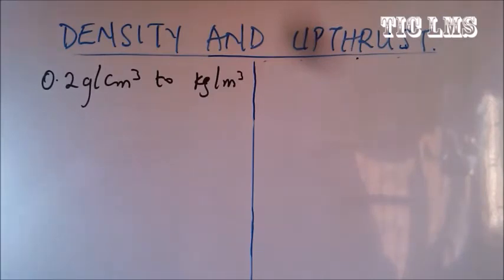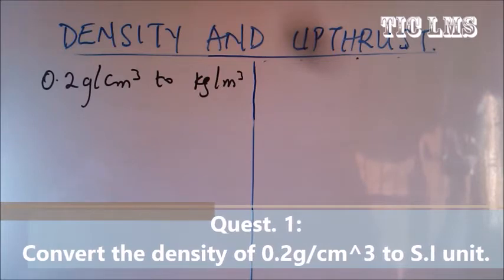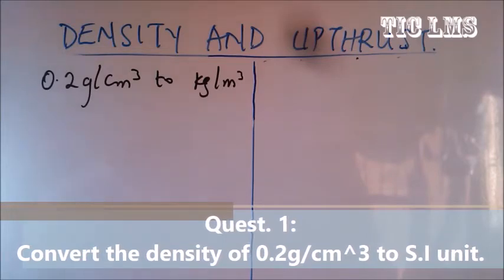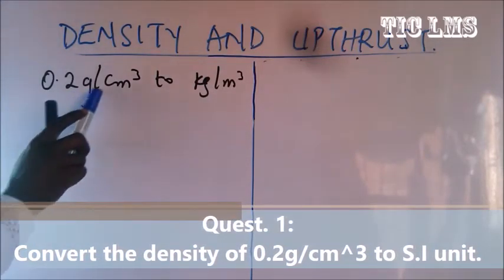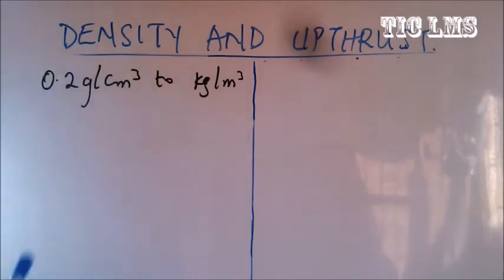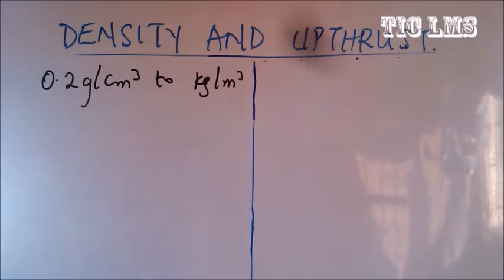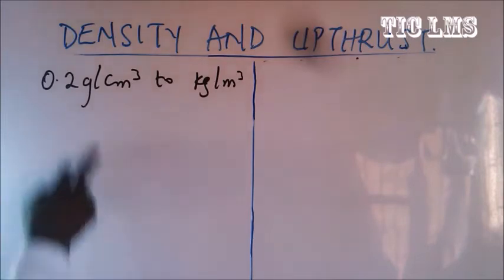Question one says: convert the density of 0.2 gram per cm cubed to SI units. The SI unit of density is kilogram per meter cubed, not gram per cm cubed. In physics questions you are required to work with SI units, so it's important to know how this conversion is done.